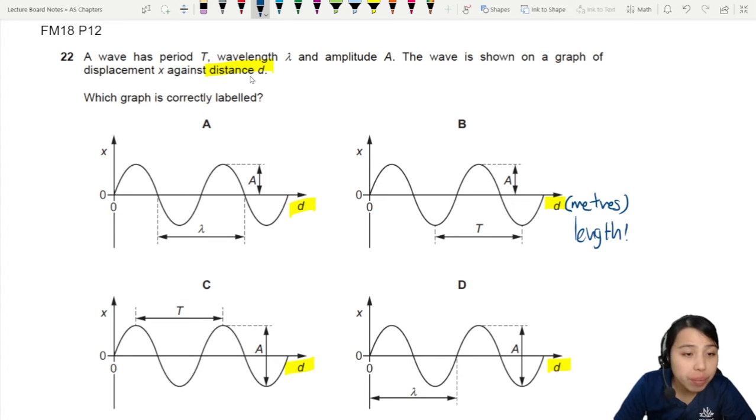So if you look at what is measured on the x-axis, one complete cycle. Let's look at the solutions. A: which one is currently labeled? One complete wave cycle, that is wavelength lambda in terms of meters. Is it a distance? Yes, it is. So it matches. Okay, very good.